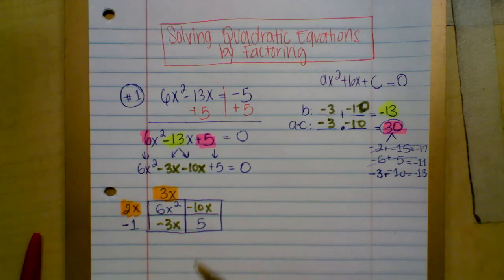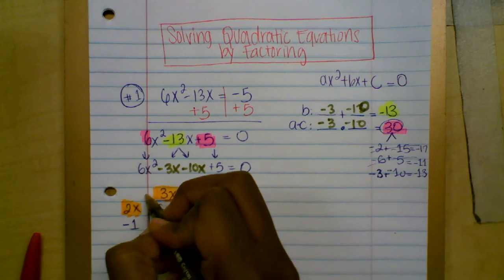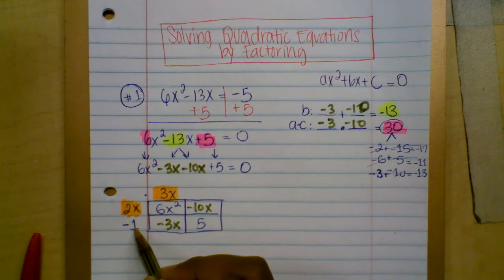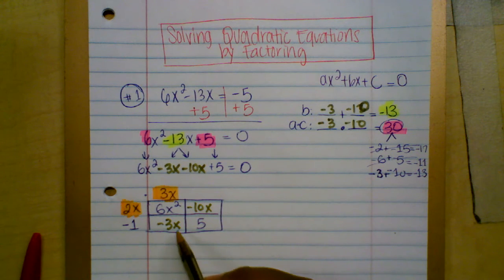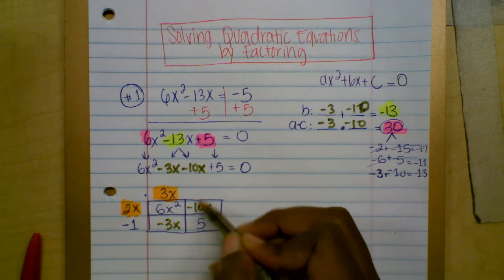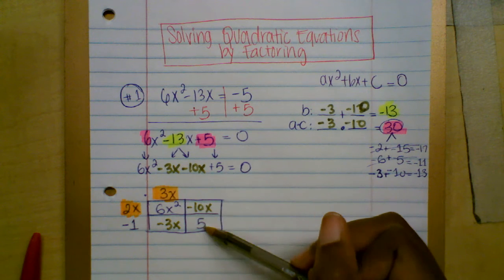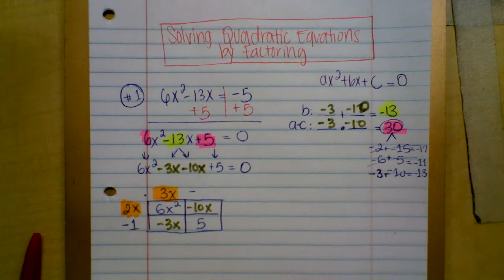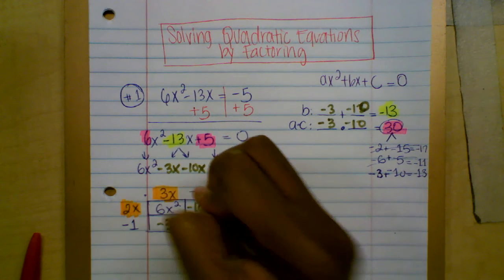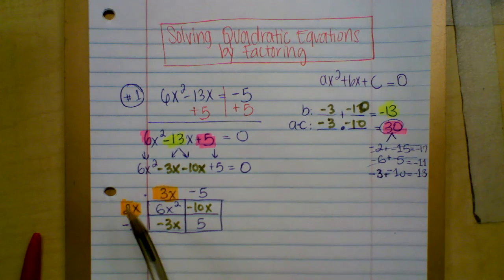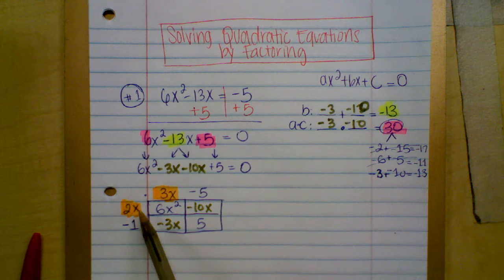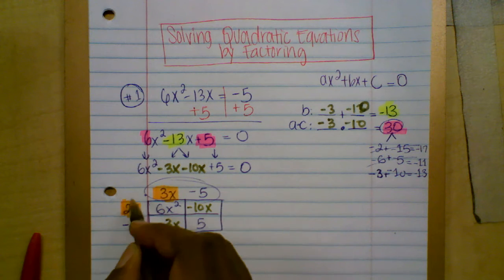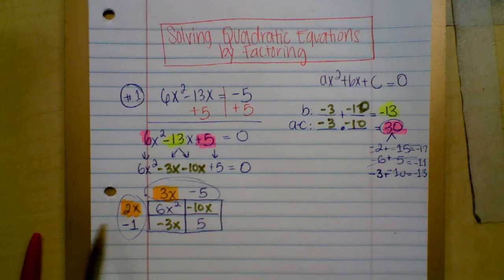Let me check: 2x times 3x is 6x squared. Negative 1 times 3x is negative 3x. For the right column, both 5 and negative 10x are divisible by negative 5. So 2x times negative 5 is negative 10x, and negative 1 times negative 5 is positive 5. I've found the factors from the edges of the box.